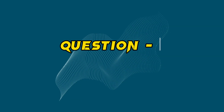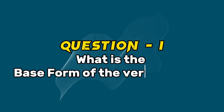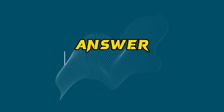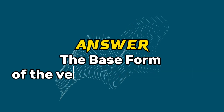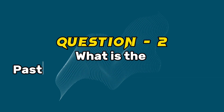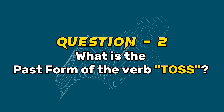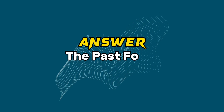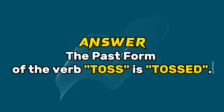Question 1: What is the base form of the verb toss? Answer: The base form of the verb toss is toss. Question 2: What is the past form of the verb toss? Answer: The past form of the verb toss is tossed.